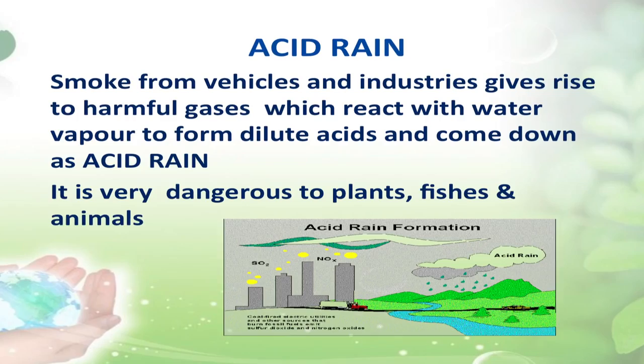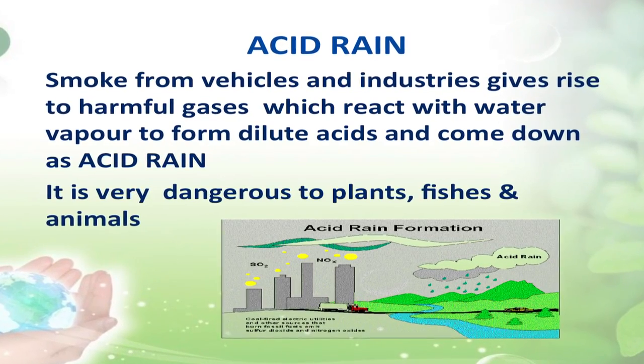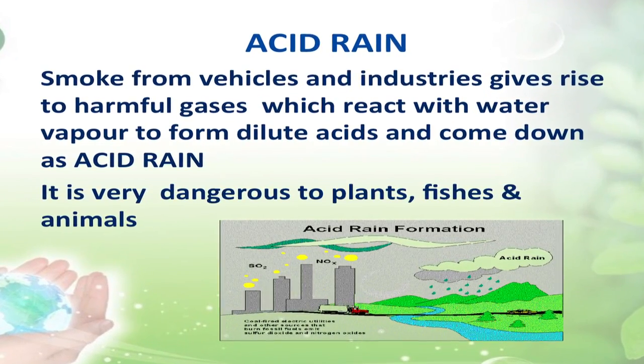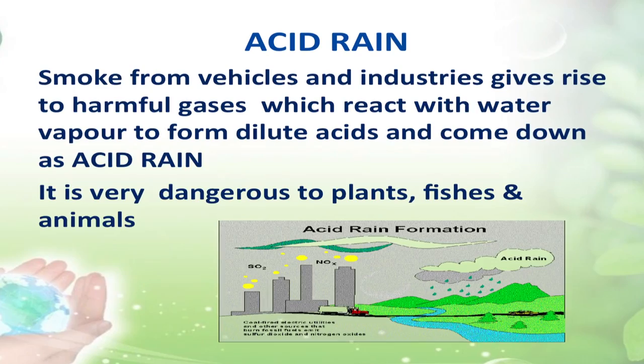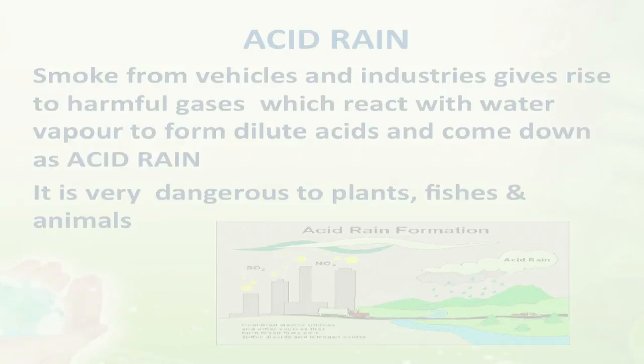Acid rain: Smoke from vehicles and industries gives rise to harmful gases which react with water vapour to produce dilute acids and come down as acid rain. Acid rain is very dangerous to plants, fishes, animals, and humans also.